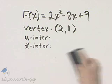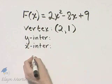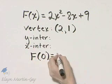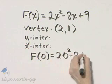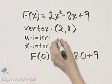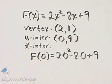Now how do you find the y-intercept? You let x be 0. So to find the y-intercept, we're finding f of 0, which is 2 times 0 squared minus 8 times 0 plus 9. It is 9. So when x is 0, y is 9. That is our y-intercept.